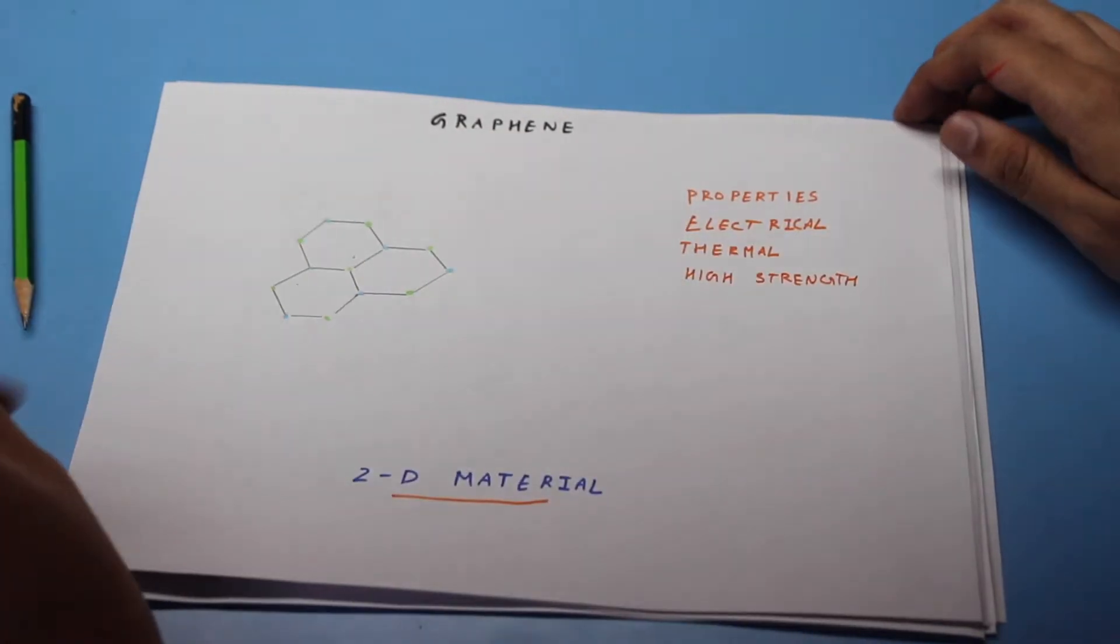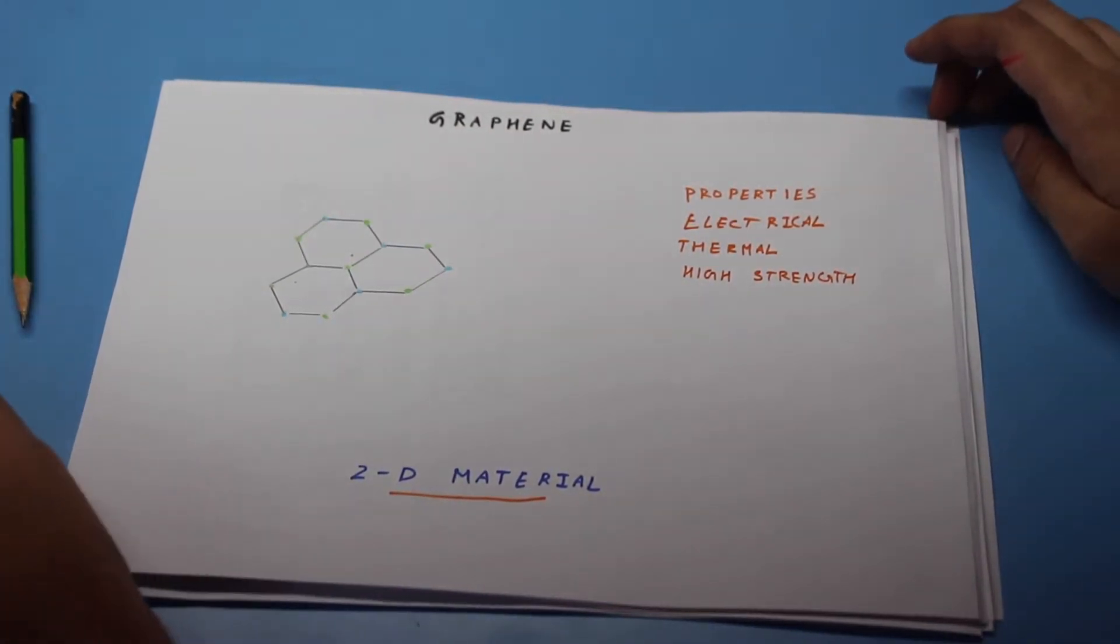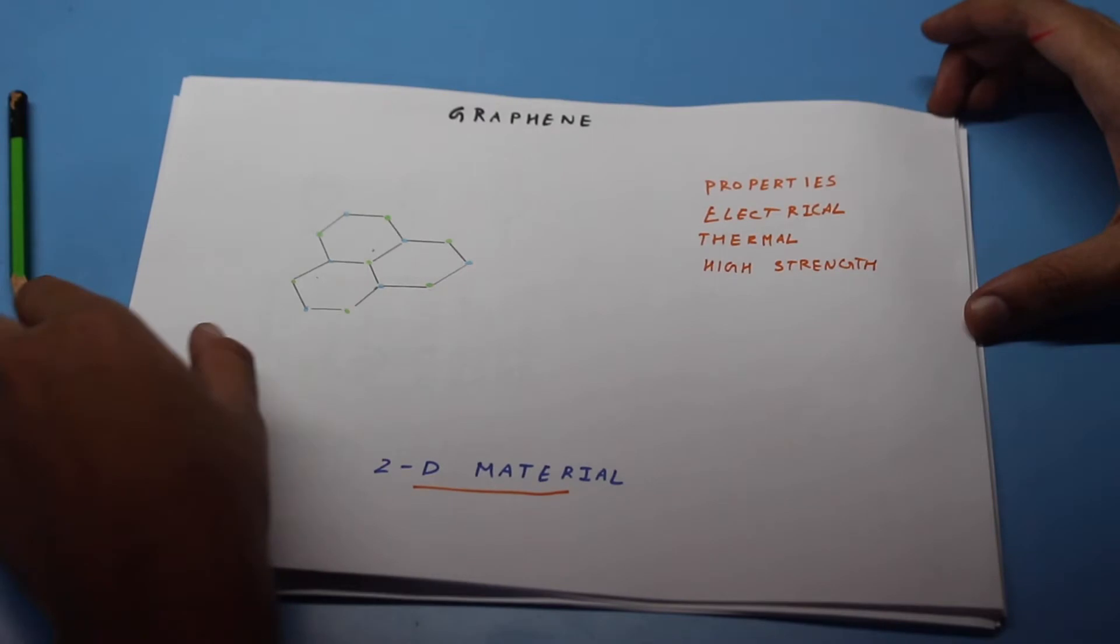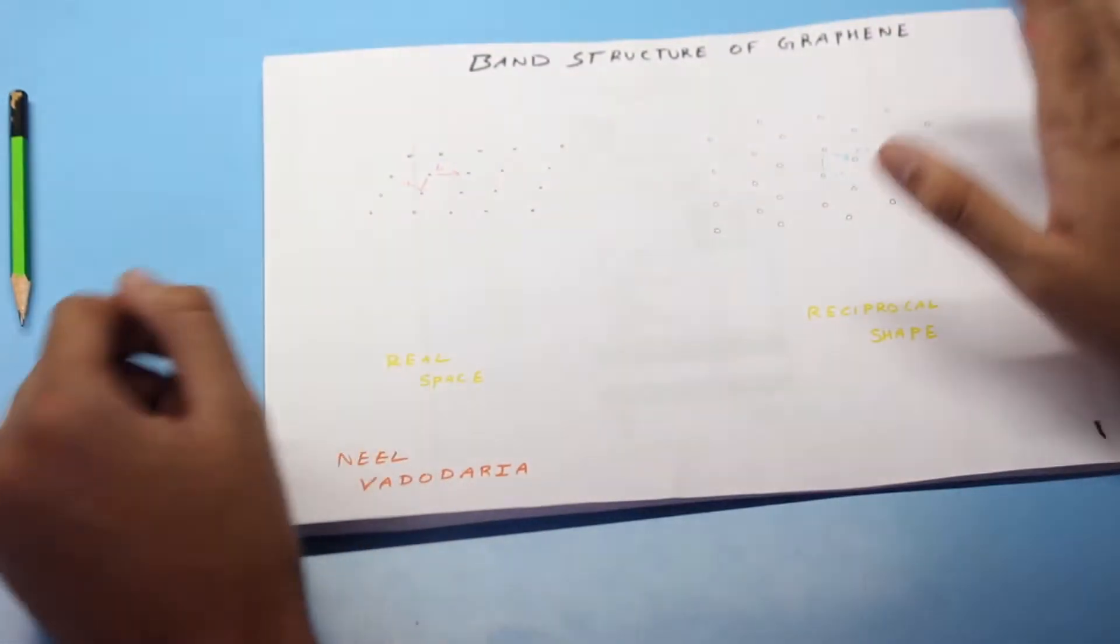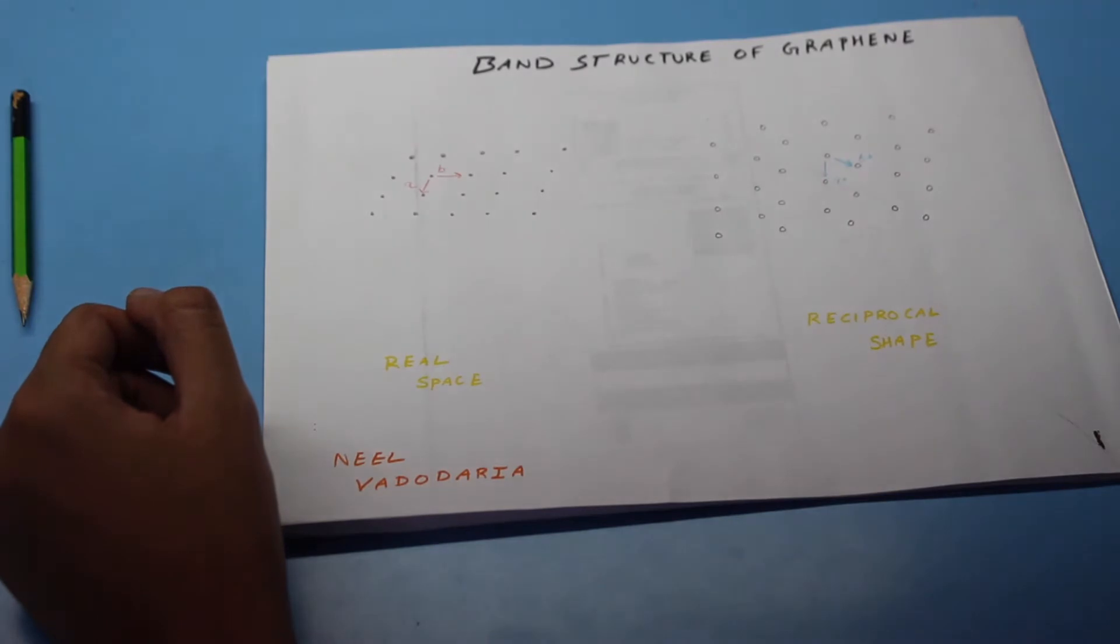To understand what makes graphene so special, we will have to study its band structure. What is band structure? Band structure of graphene or in general is a plot of energy versus the wave vector k which tells us about the different bands like the valence band or conduction bands which are present in an atom or molecule.